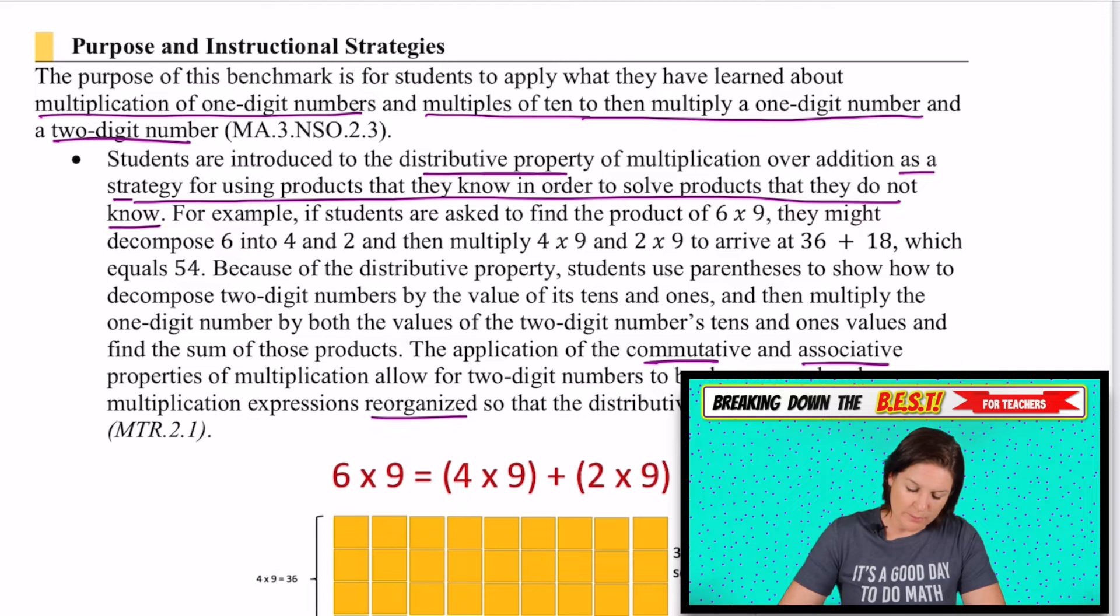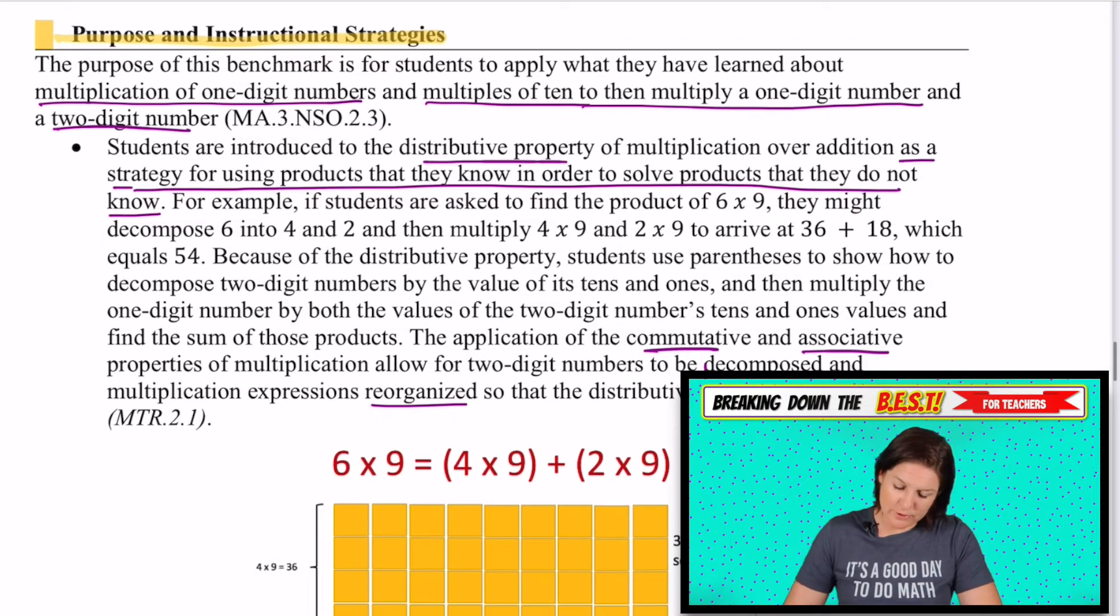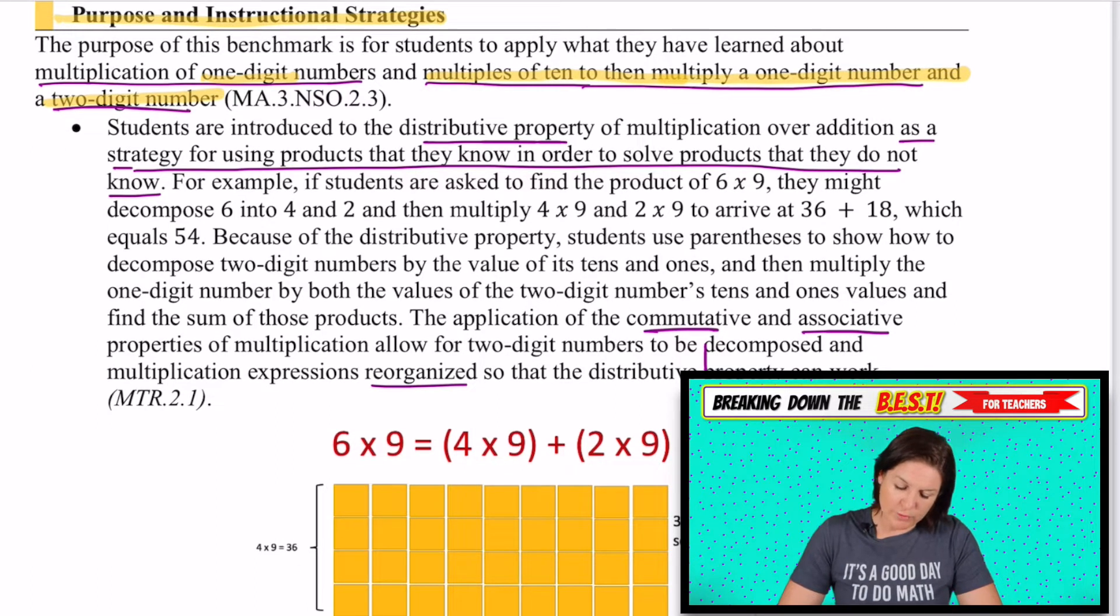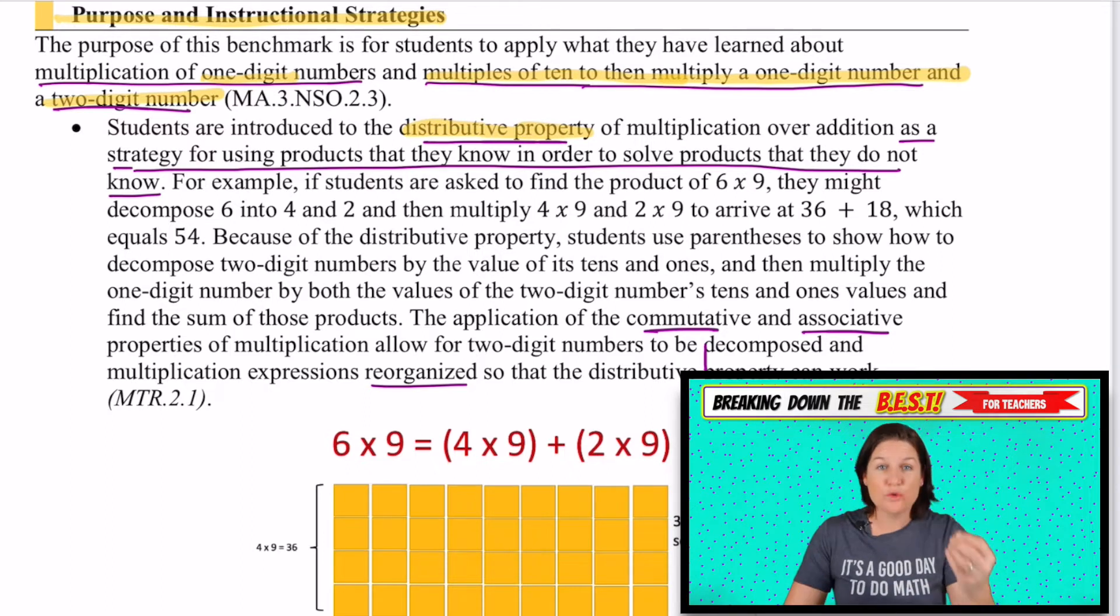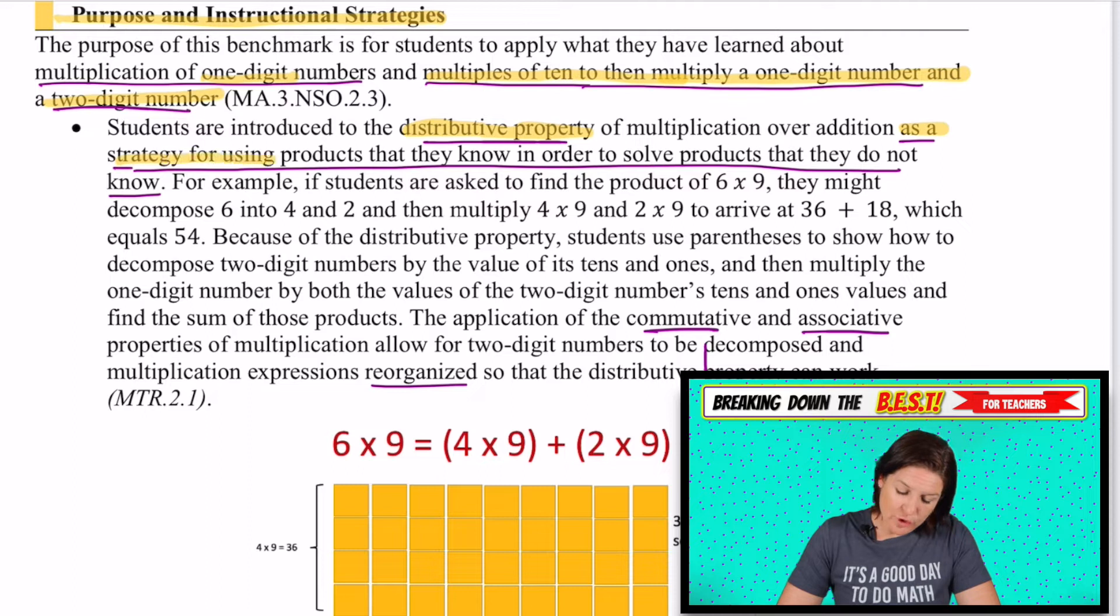So we're scrolling down into the purpose and instructional strategies section, and I'm just going to mention what jumped out at me here. It says that we are multiplying, like we said, one digit numbers and using the multiples of 10 to then multiply one digit number and a two digit number. This is the most important thing. The main takeaway that we are using the distributive property as a tool, as a strategy for using products that they know in order to solve products that they do not know. And I'm going to go ahead and highlight the example too.